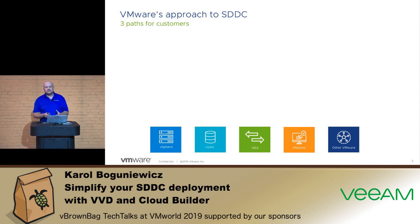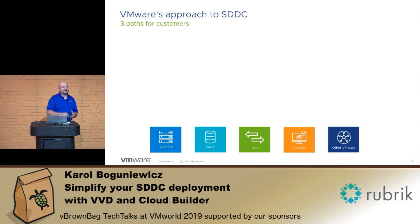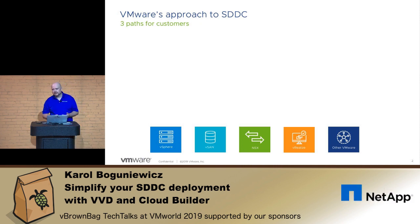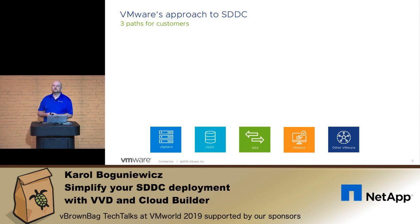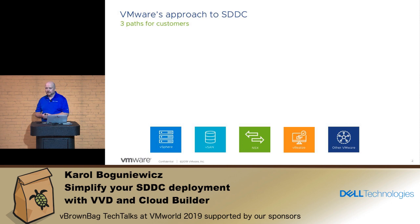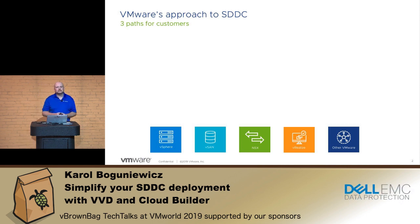I wanted to talk with you today about VMware Validated Designs and how you can leverage them to simplify and accelerate SDDC deployment in your environment. VMware sees three different paths for adopting the SDDC architecture. All three paths leverage exactly the same ingredients in general — things like vSphere, vSAN, NSX, and vRealize Suite. However, they differ in the level of automation, integration, standardization versus flexibility, and time required to implement.